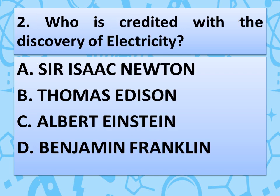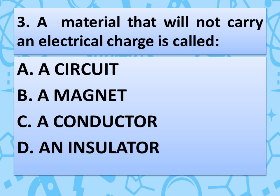Who is credited with the discovery of electricity? Read the options and think about the correct answer. The correct answer is Benjamin Franklin. A material that will not carry an electrical charge is called — and the correct answer is option A — an insulator.